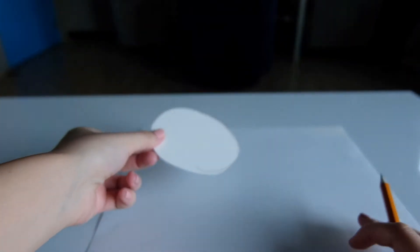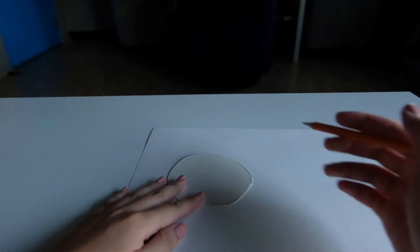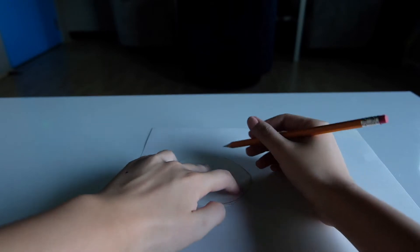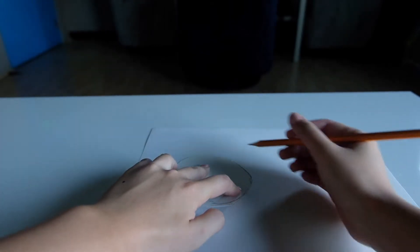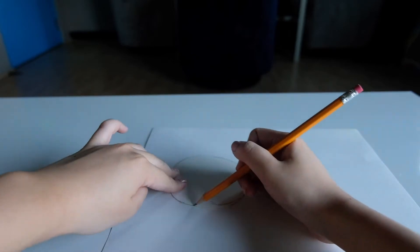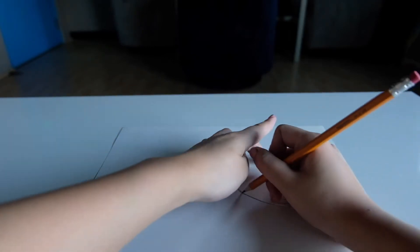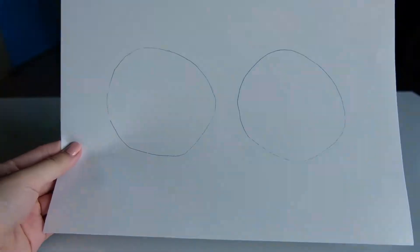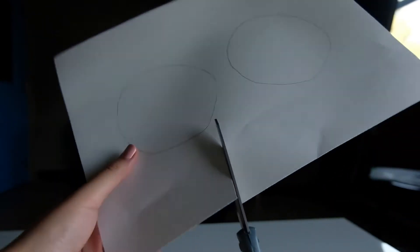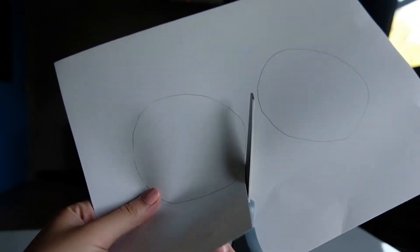When you are done cutting out the circle, use it to trace more circles on your white paper. Just place it on top of the paper and use a pencil to trace two more circles. When you are done tracing your two circles, grab your pair of scissors and cut out both of the circles.